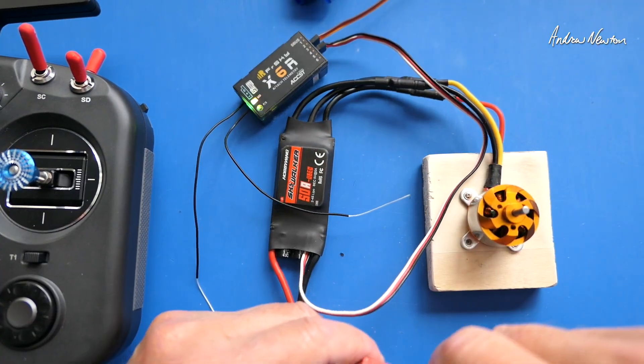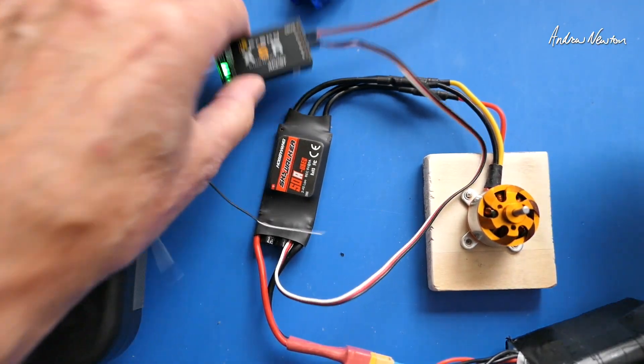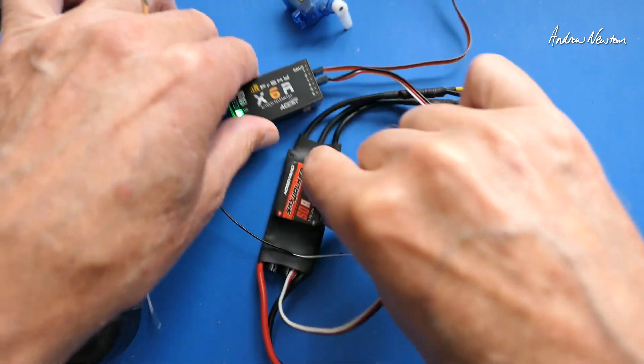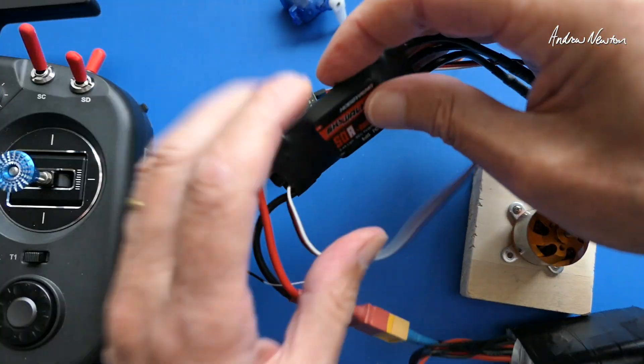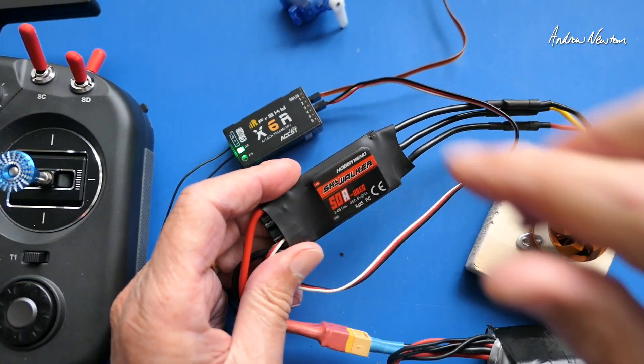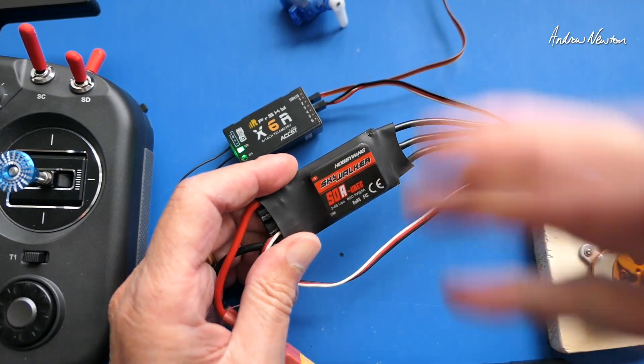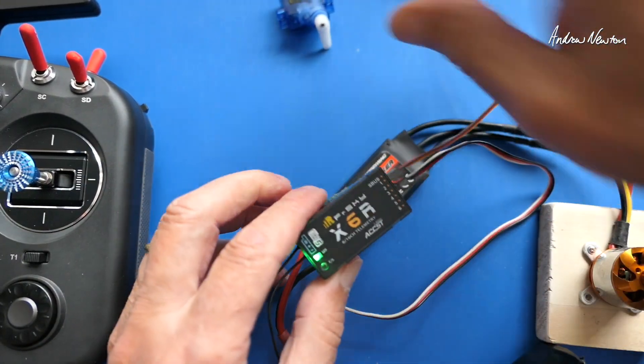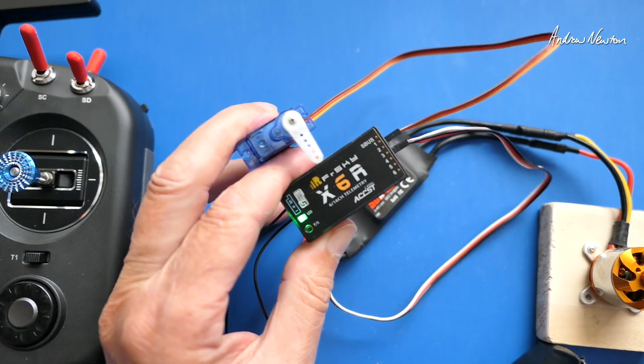And the speed controller connects into the throttle channel in your receiver. And when we plug the speed controller into the flight battery, the speed controller has an inbuilt voltage regulator to cut down the 12 volts from the battery down to five volts.